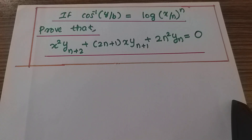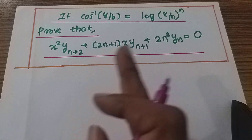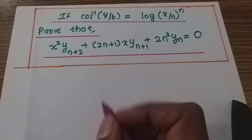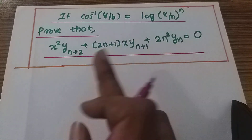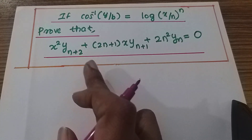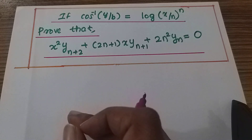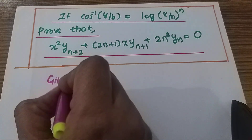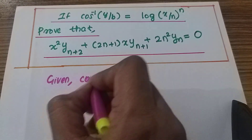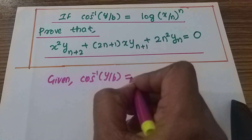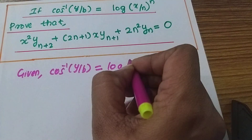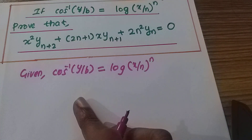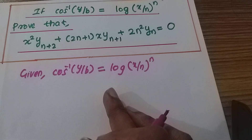Given question: y by b is equal to log of x by n, the whole power n. Prove that the maximum derivative is the n plus 2 derivative. We will differentiate two times to find the nth derivative. Given: cosine inverse y by b is equal to log of x by n, the whole power n. We will differentiate left and right.